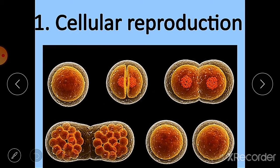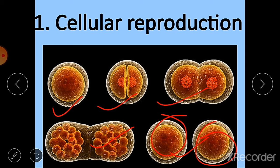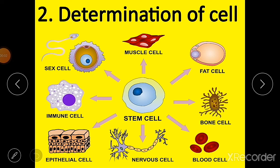Now let's see the functions of the nucleus. First is cellular reproduction — the nucleus plays a central role in the process by which a single cell divides and forms two similar cells. The new cells are identical to each other.